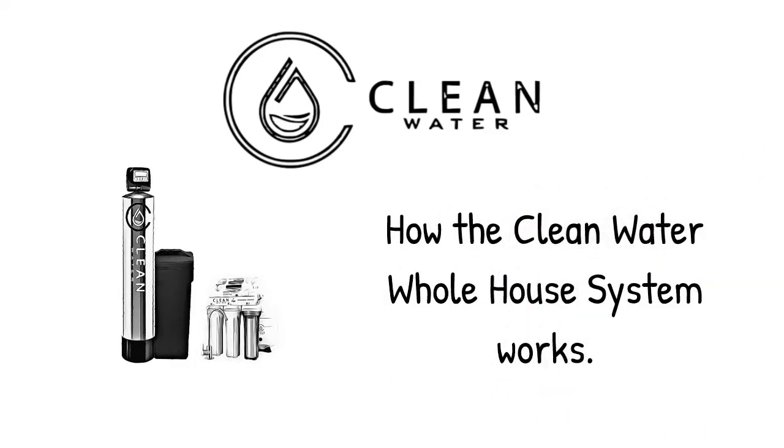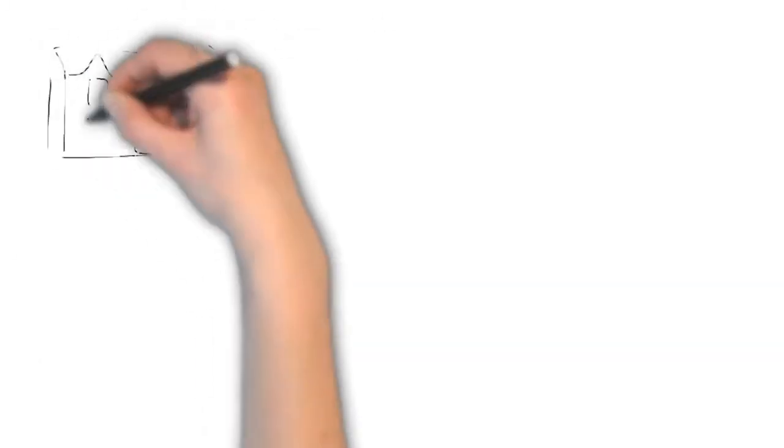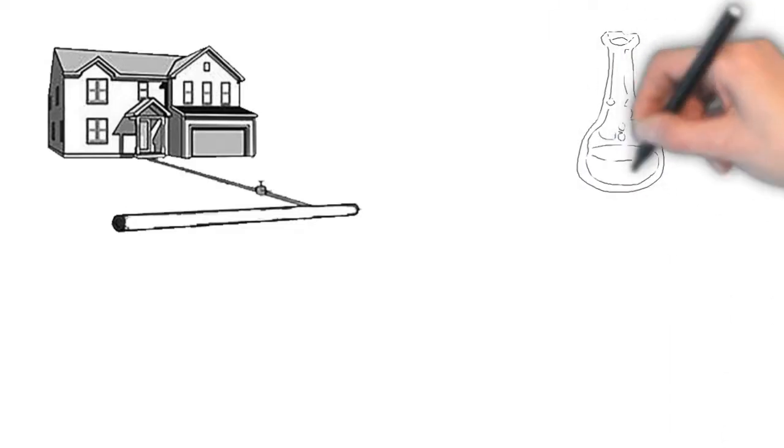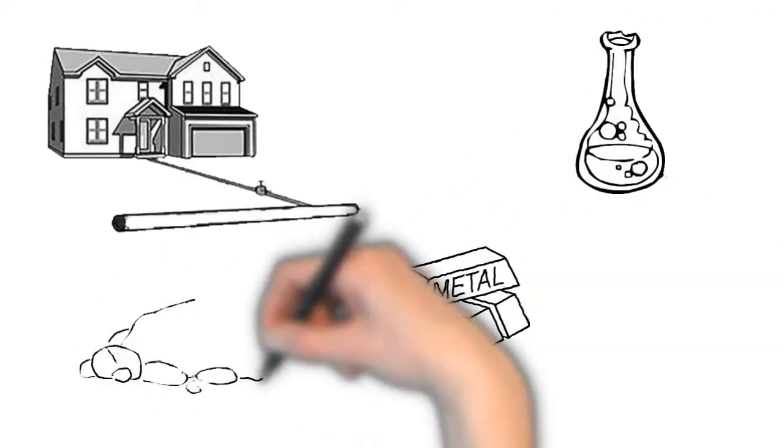How the Clean Water Company whole house system works. The tap water that is delivered to your house is more contaminated than you might think, containing harmful chemicals, metals, minerals, microorganisms, and volatile organic compounds or VOCs.